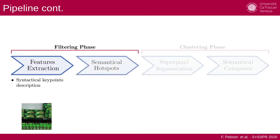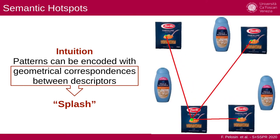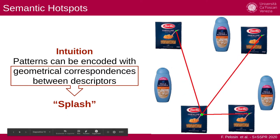Now we have a syntactical description of these key points, but we don't want to retain all the key points. We want to filter all the noisy key points which are not part of a visual pattern. We do so by exploiting this intuition that all the patterns can be encoded through geometrical correspondences, which we call splashes.